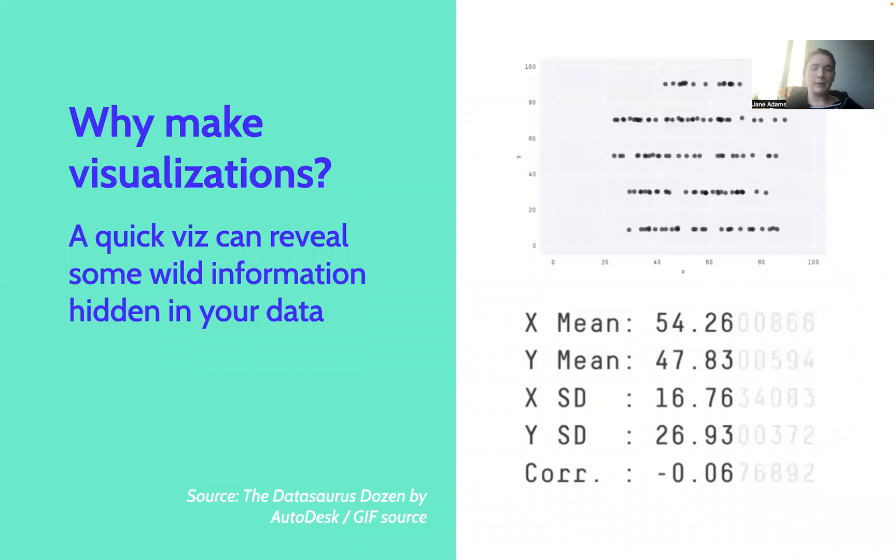So why make data visualizations? Well, a quick vis can reveal some really wild information that's hidden in your data. Some folks might already be familiar with Anscombe's Quartet. Another version of this narrative that I love is the datasaurus dozen by Autodesk. Basically what we're seeing here on the right is a series of data sets that all have the same summary statistics, the same mean, the same standard deviation, and the same correlation.